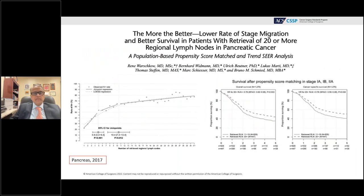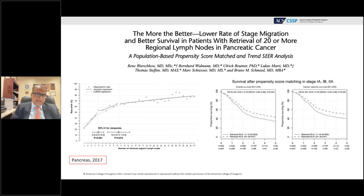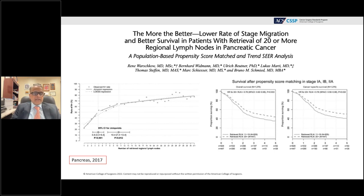A study by Warschow using the SEER database asked how many lymph nodes are needed to accurately stage the basin. Once you reach about 20 lymph nodes, the rate of finding additional positive nodes starts to fall, suggesting you need to harvest at least 20 lymph nodes for accurate staging. Patients with Stage 1a, 1b, and 2 disease showed a direct correlation between overall and cancer-specific survival and harvesting more than versus fewer than 20 lymph nodes — you need about 20 to prevent stage migration.